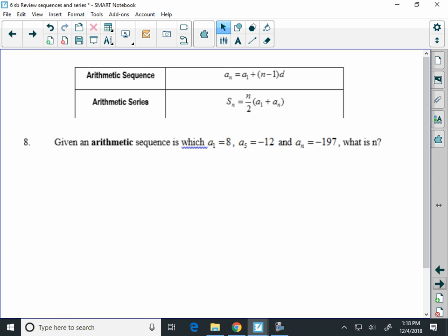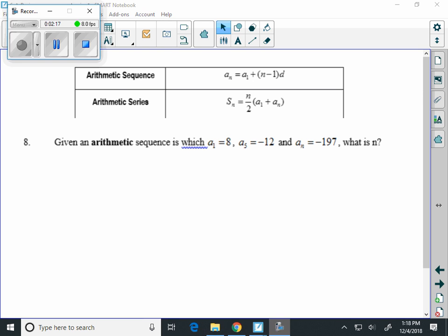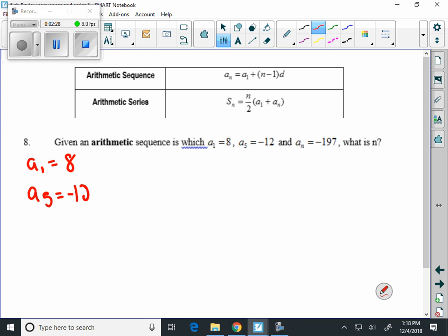Well a couple things here that we can point out. Let's first use the a sub 1 equals 8 and the a sub 5 equals negative 12. And let's use that to figure out what our common difference is. If we do use that then once again this is a sub n. That means that n equals 5.